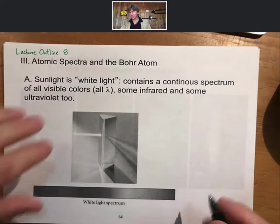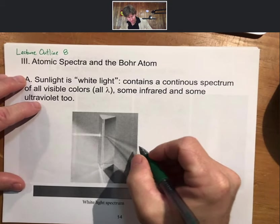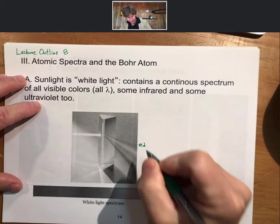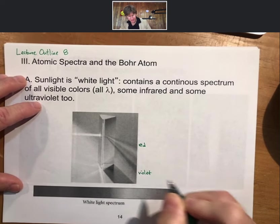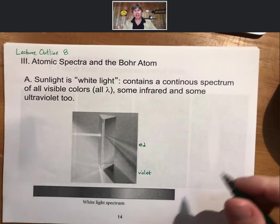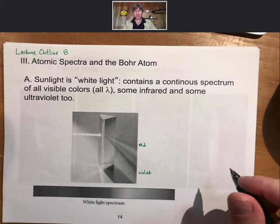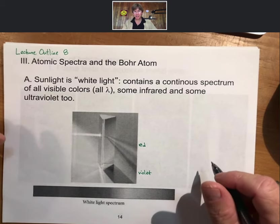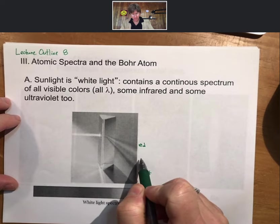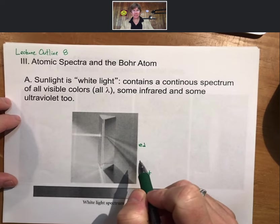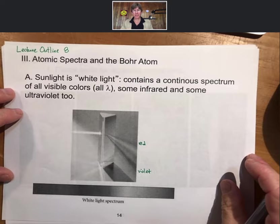Up here is the red, down here is the violet. The prism separates those colors — white light comes in, the prism separates and refracts it into its colors. As a side note, violet light is refracted more.